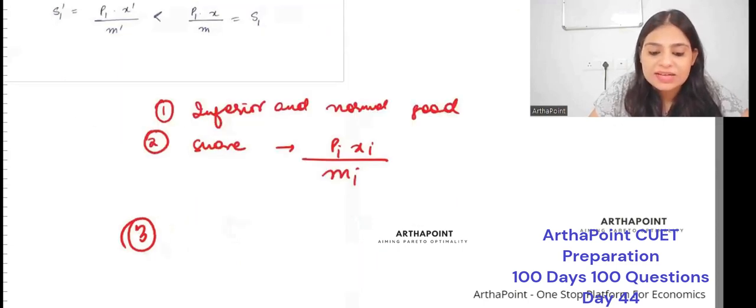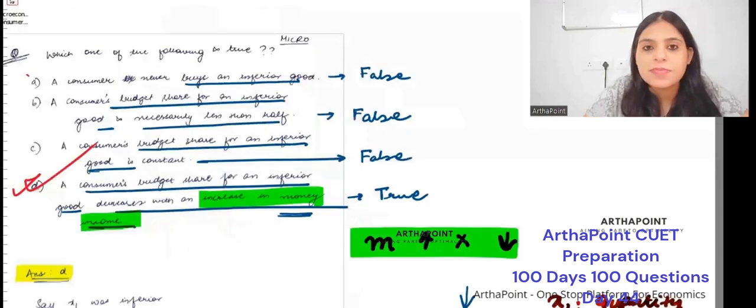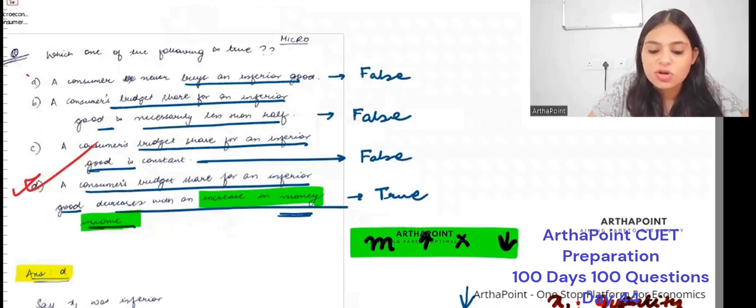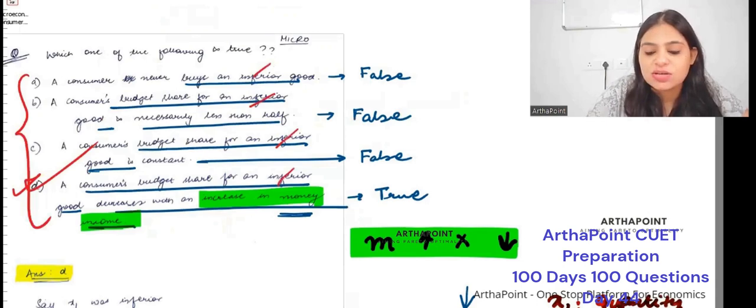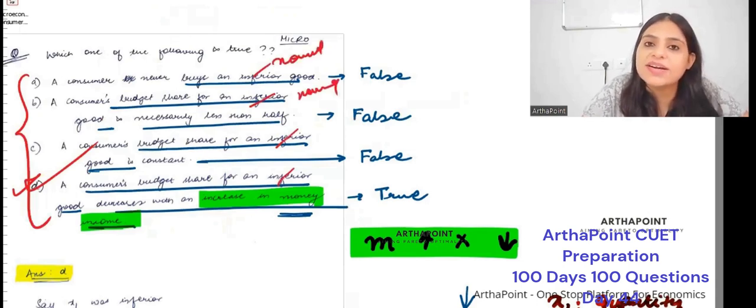I want you to look at these four statements, but now everywhere instead of inferior, just take normal and check the answers. Just take everywhere normal. That is a question for you to try.